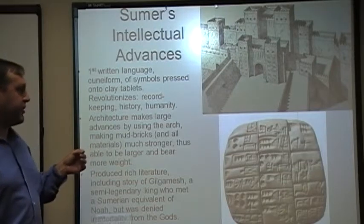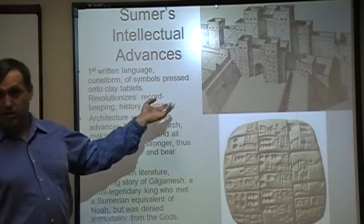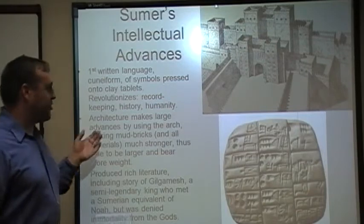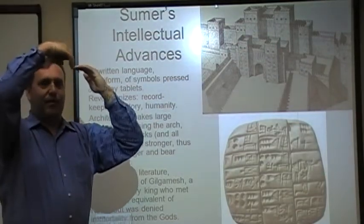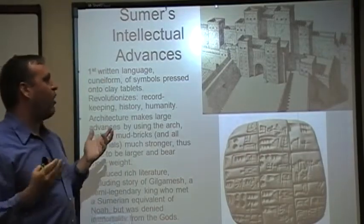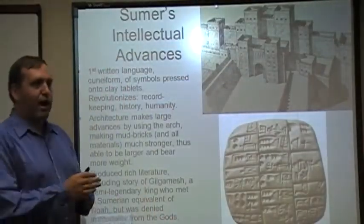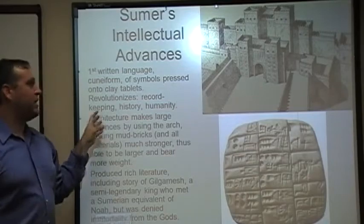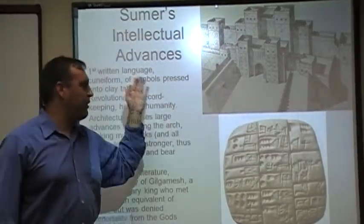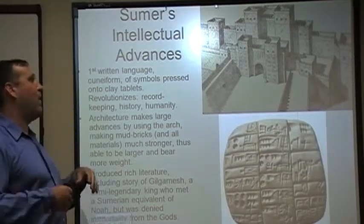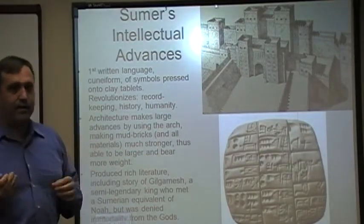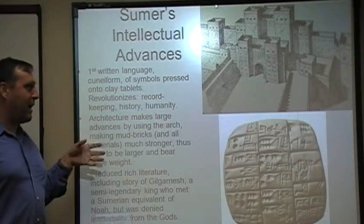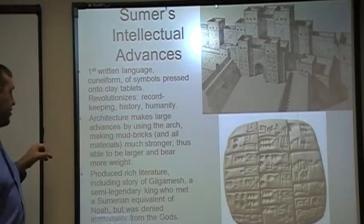Sumerian architecture is going to make some huge strides forward and it's going to give us the arch. These mud bricks and materials are much stronger by using the arch — you've got the capstone, the keystone that basically disperses weight all the way along the length of the bricks rather than trying to make a square lintel, which concentrates weight at the center and is much more likely to break. The reason this is important is you can now have large stone structures with windows and doors that aren't going to crumble. Instead of relatively small lightweight structures, you can have very large stone structures that are big defensible positions — a major change from the way architecture had worked before.